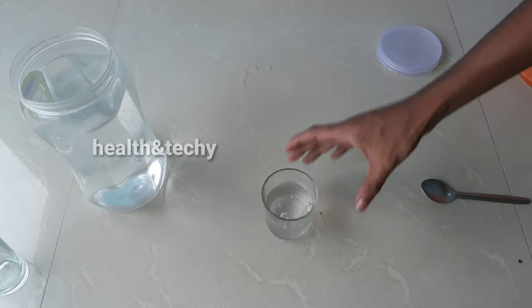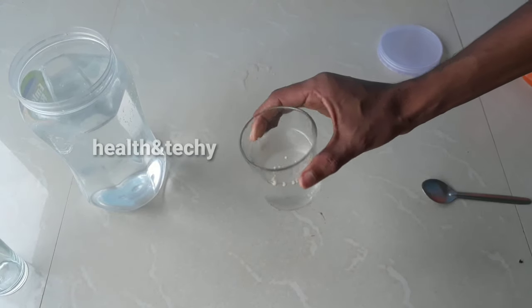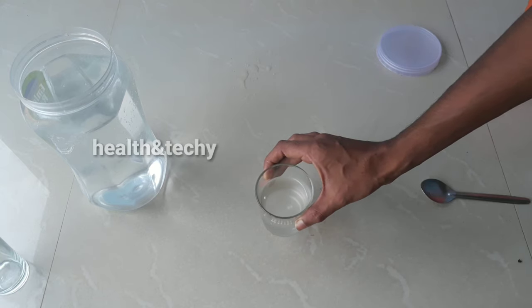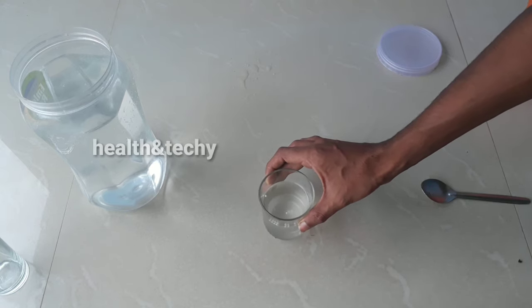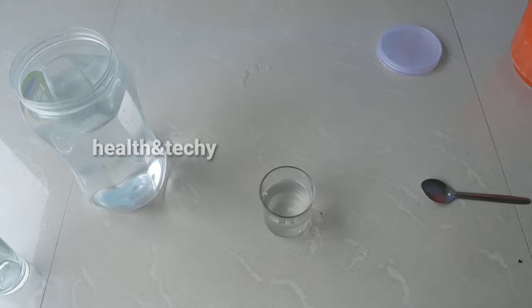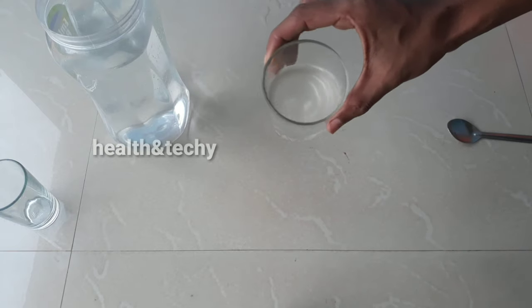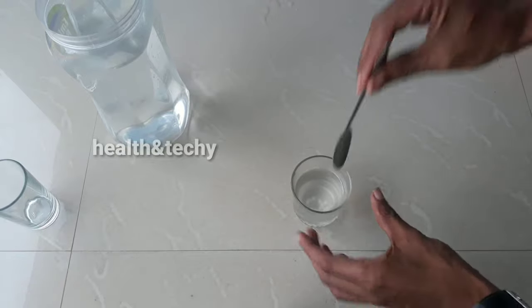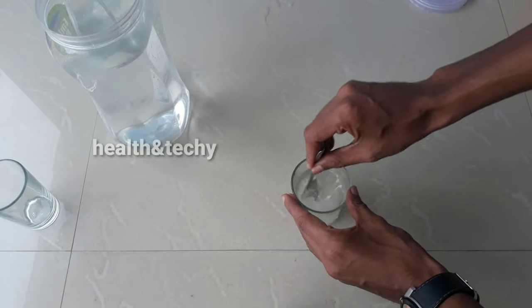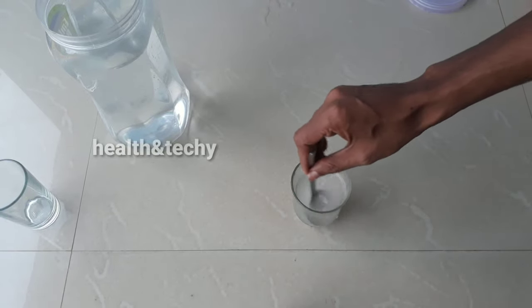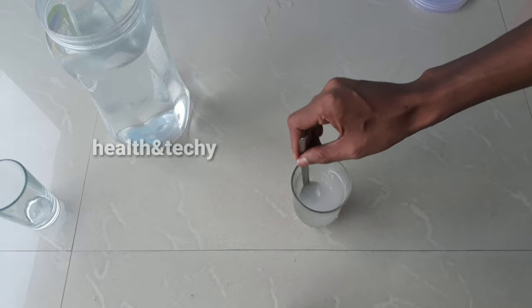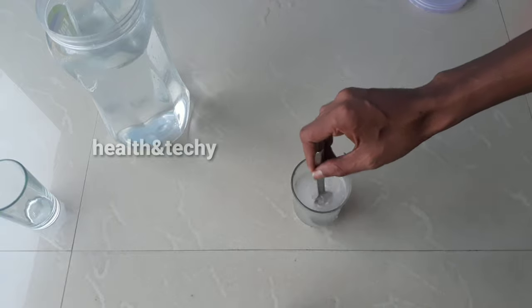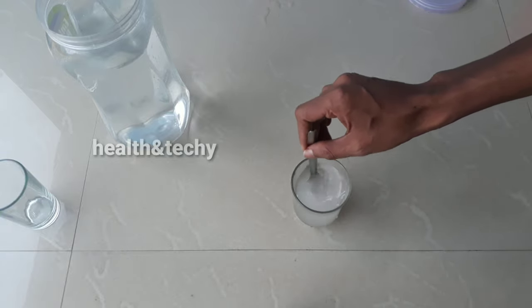After five minutes, you can see that your solution will be a little more turbid and it will look a little starchy. What you should do is take a spoon and then dissolve the yeast into the water. Now your solution will be exactly looking like a starchy solution.